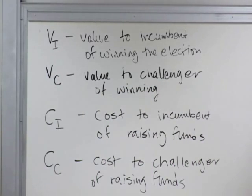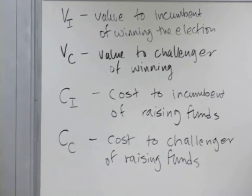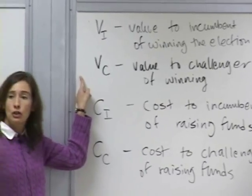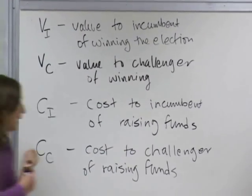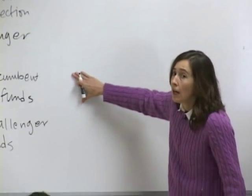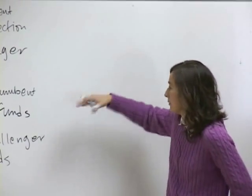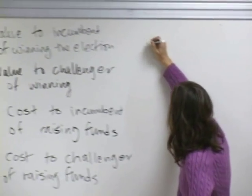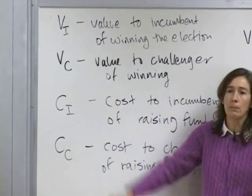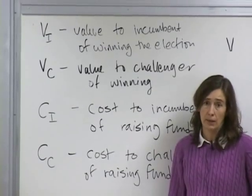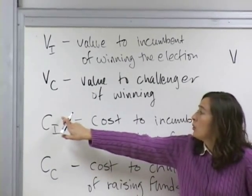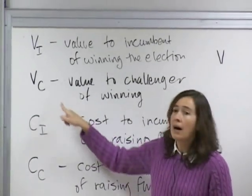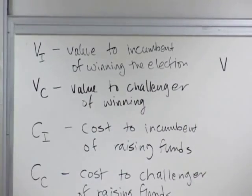I'm saying the payoffs in this game are composed of two variables: one representing how much they care about the election, and another representing how much they dislike fundraising. The other assumption I'll make is that all of these variables are positive. It's easier to assume all variables are positive and then use negative signs when putting them into the payoffs. It's just easier to manage if we keep all our variables in the positive range.